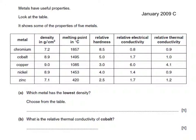Here's a typical question. Metals have useful properties — look at the table showing some of the properties of five metals. We're given five metals and information about their density, melting point, relative hardness, and electrical and thermal conductivity. We're asked which metal has the lowest density. The density column shows the lowest value is the smallest number, so the answer is zinc.